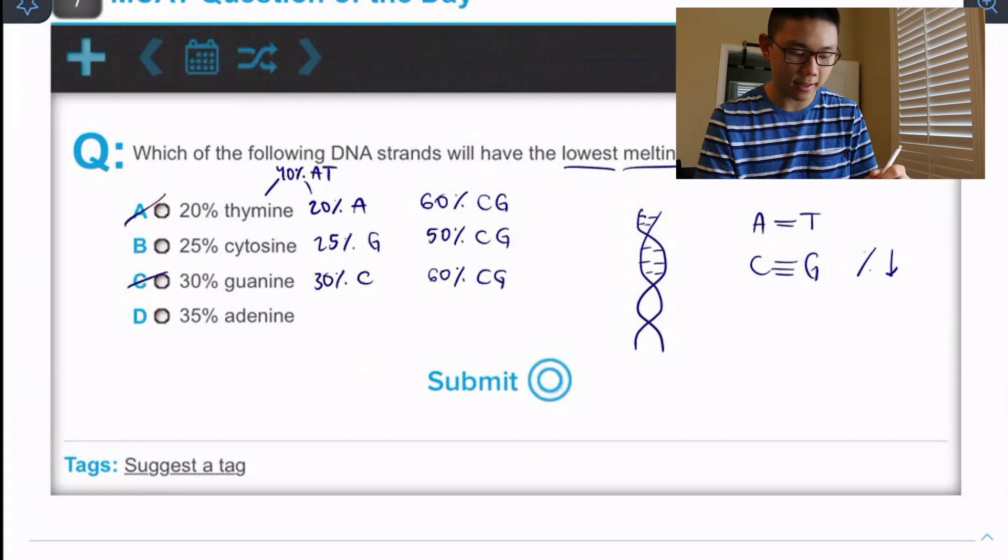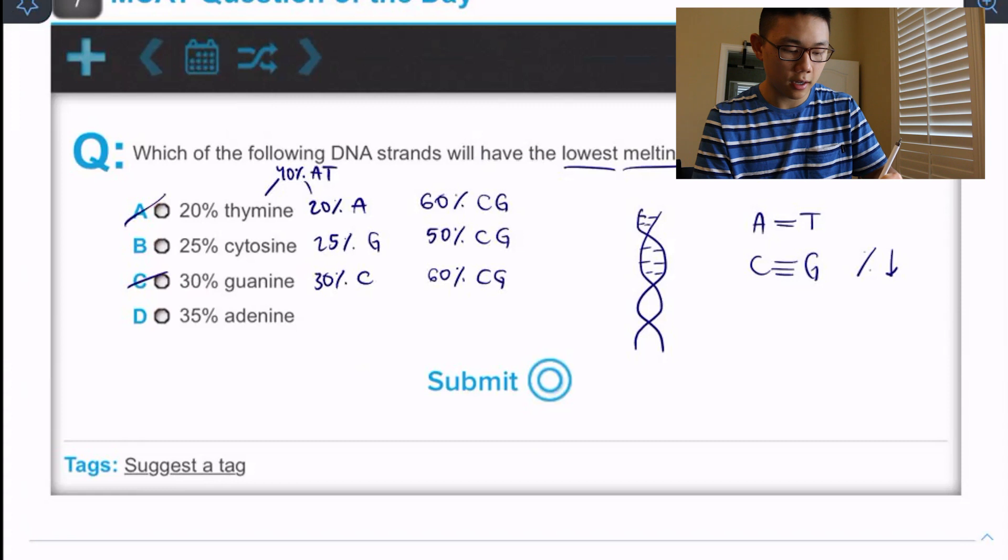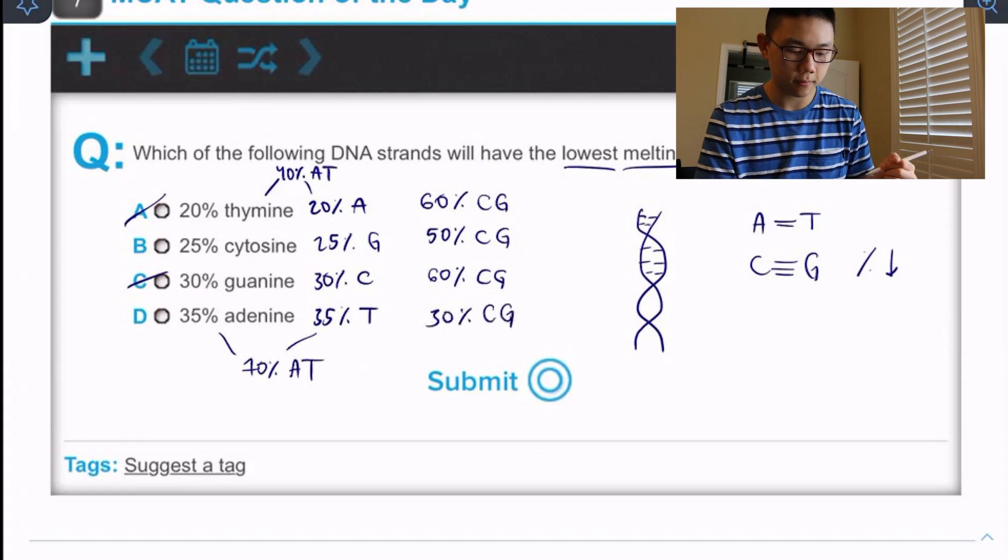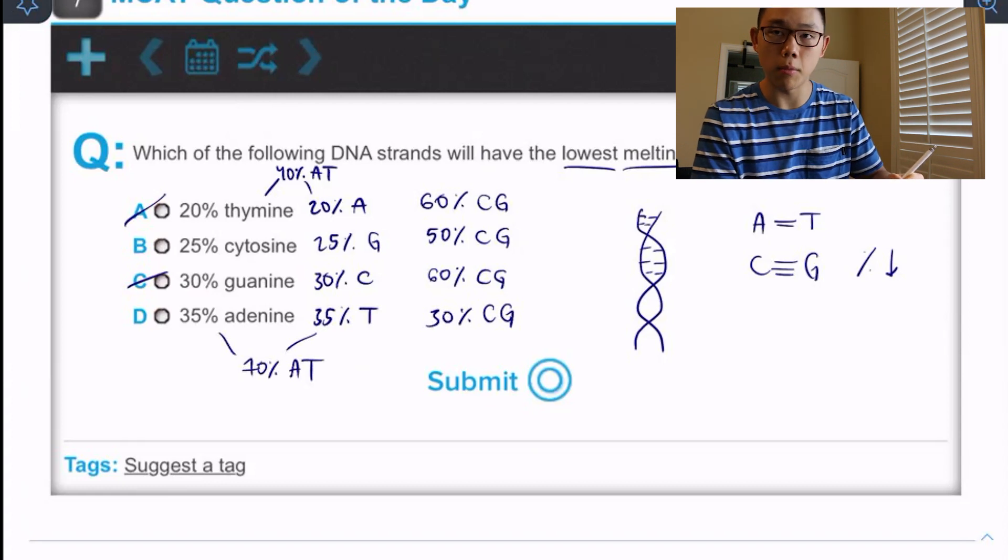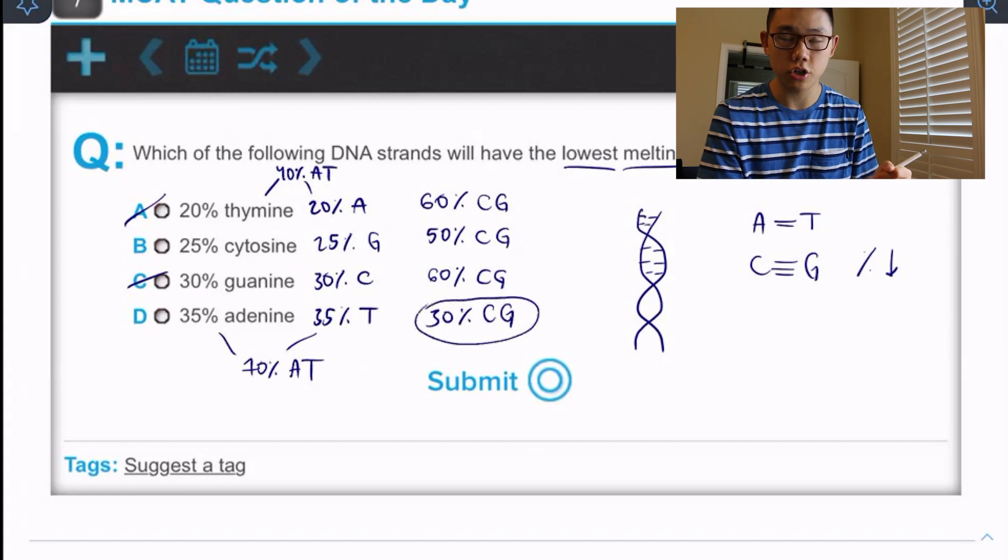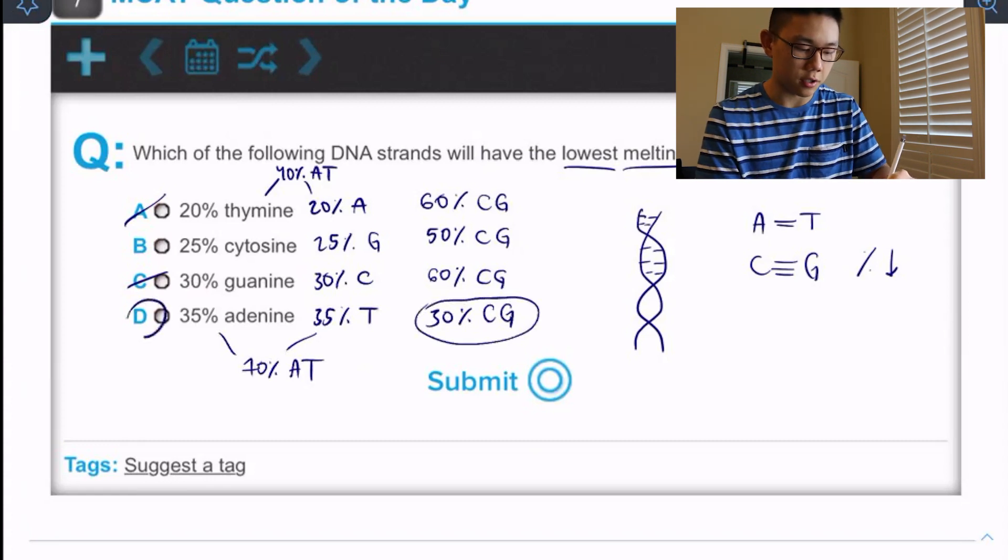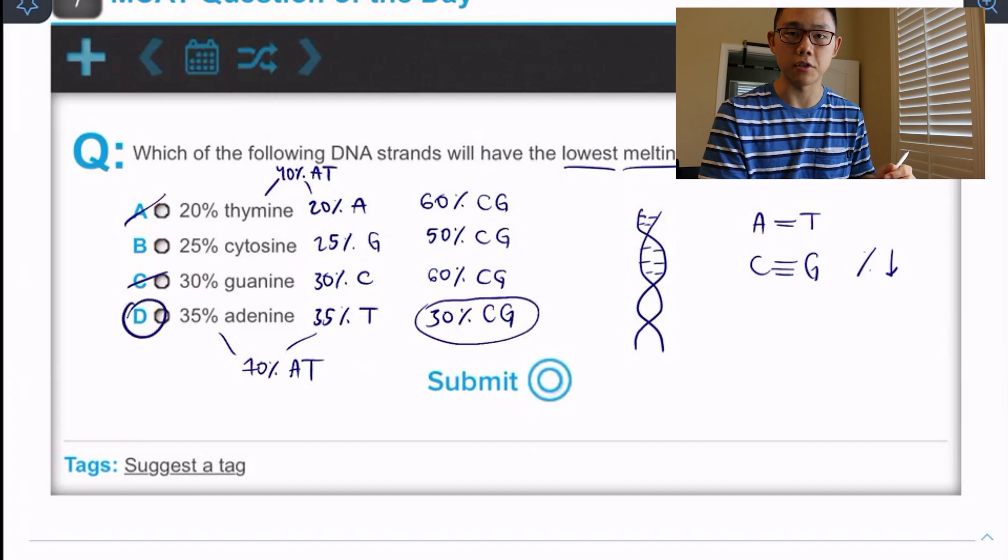Finally, answer choice D. 35% adenine tells us we also have 35% thymine, which tells us 70% A T and then 30% C G. Okay. So now I know that D has to be the most unstable because we have the least percentage of stable base pairing. So I'm going to choose D and that is the correct answer.